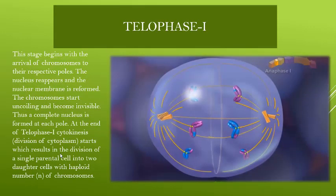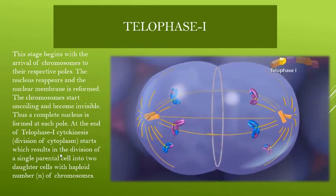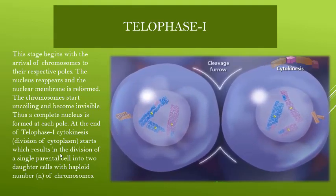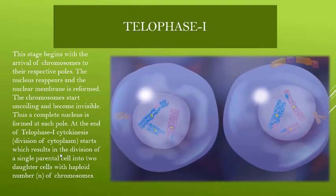The last stage of Meiosis I is Telophase I. It begins when the chromosomes reach their respective poles. The nucleus starts to reform, and the chromosomes begin to uncoil, becoming invisible as they were before division. Cytokinesis also occurs — the cytoplasm divides into two cells. One parent cell divides into two cells, and in both daughter cells the chromosomes are half in number — a haploid number. That is the end of Meiosis I, where one diploid parent cell has produced two haploid daughter cells.